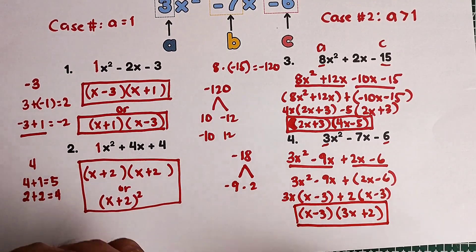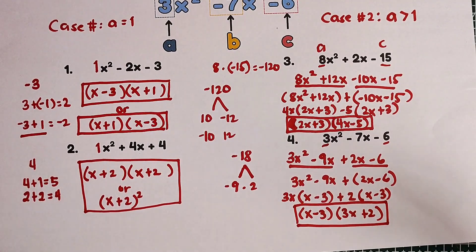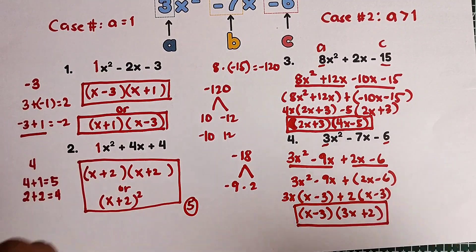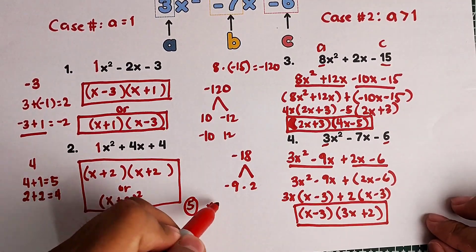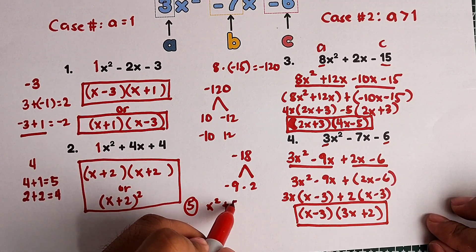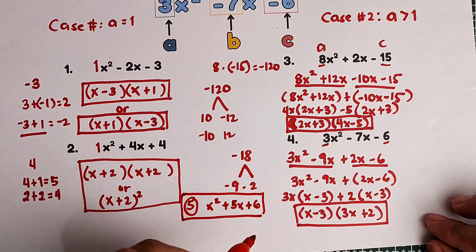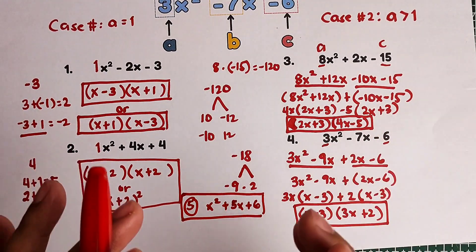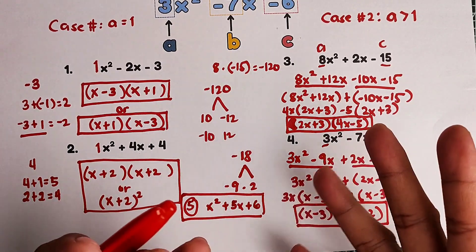I hope you guys learned something from this video on how to factor out non-perfect square trinomials. As part of our routine, let me give you example number 5 — try x squared plus 5x plus 6 — and let me know in the comments section what your answer is. If you're new to my channel, don't forget to like, subscribe, and hit the bell button to be updated on our latest uploads. Again, it's me, Teacher Gon. Thank you very much and bye-bye!